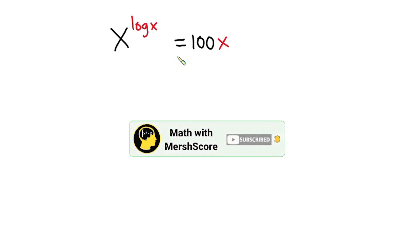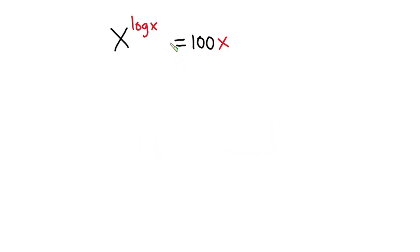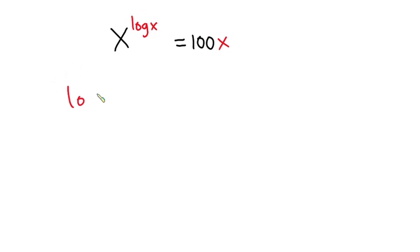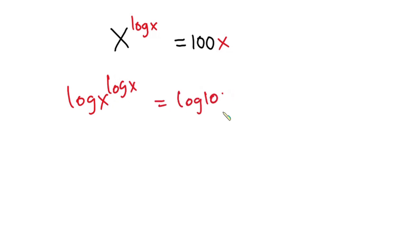Now let's get started. First I want to get rid of this exponent, so I'm going to introduce log on both sides of the equation. So we have log of x to the power log x is equal to log of 100 times x. And don't forget that the log is in base 10.